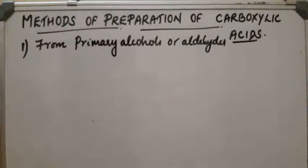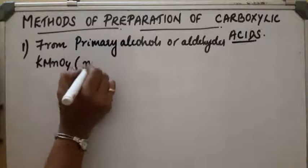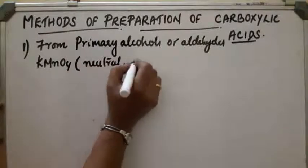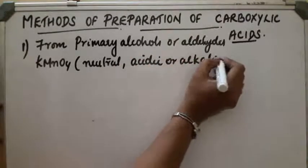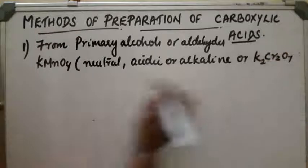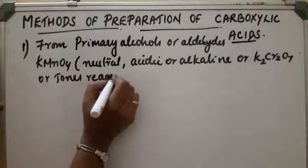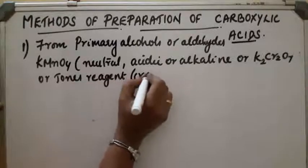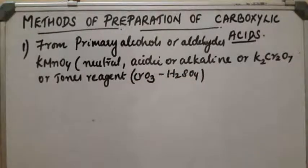Primary alcohols can be oxidized using common oxidizing agents like KMnO4, which may be neutral, acidic, or alkaline; or potassium dichromate K2Cr2O7; or Jones' reagent. Jones' reagent is chromium trioxide in sulfuric acid. Using any of these reagents we can prepare acids from primary alcohols or aldehydes.